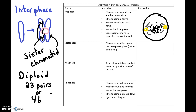Now we're going to look at metaphase. What's going to happen is that the chromosomes are going to line up in the middle of the cell. That center line is referred to as the metaphase plate — sometimes called the equatorial line. The chromosomes line up so that their centromeres are on that metaphase plate, with one sister chromatid on each side of the plate.